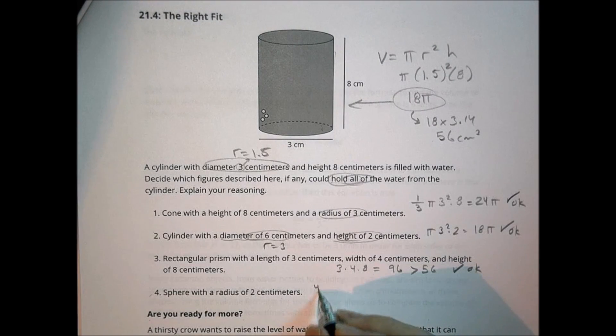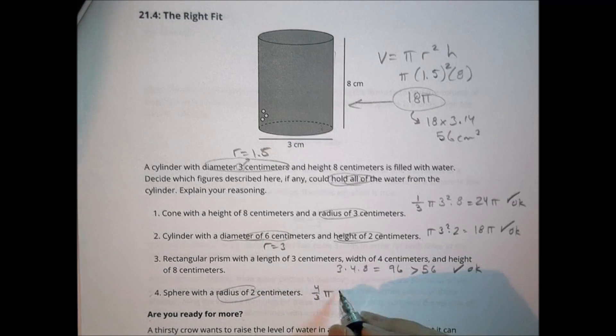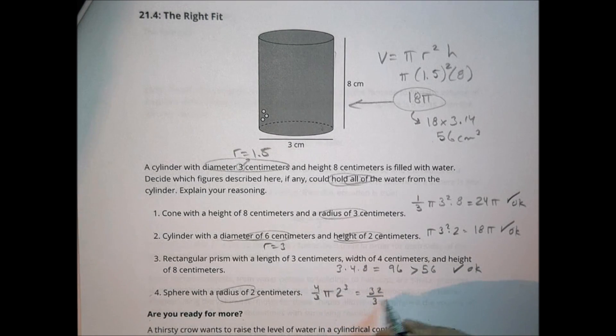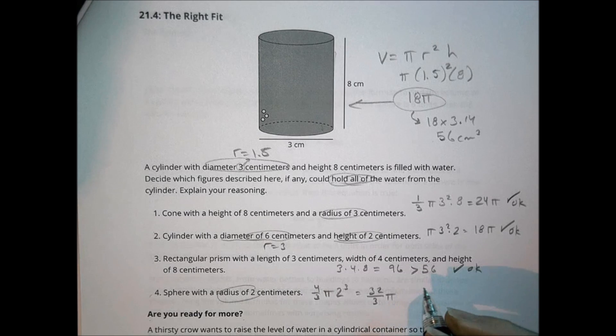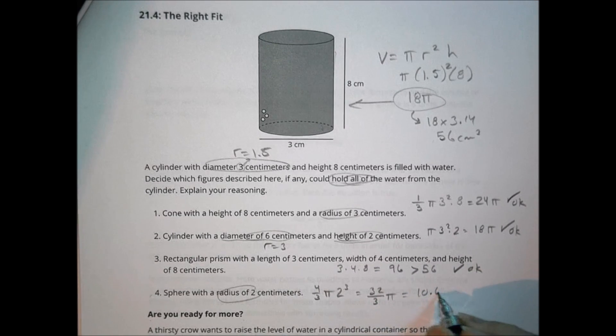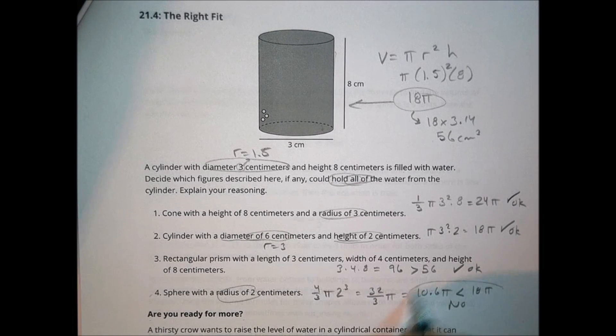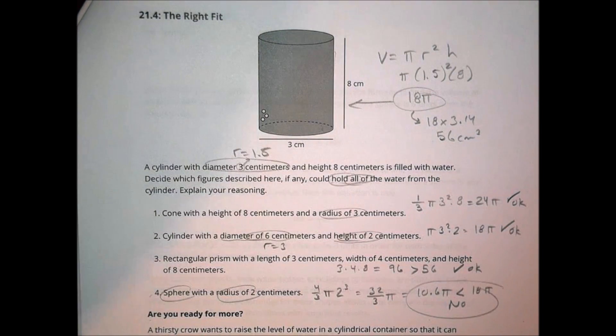Now another sphere. We have four thirds of pi times the radius, which is two cubed. So two times two times two is eight. So we end up with 32 over three pi. And 32 over three is about 10.6 pi. Now that's going to be less than 18 pi. So we would say no to this one. So no to the sphere. The sphere is not going to work, but the rest of the shapes do work there.